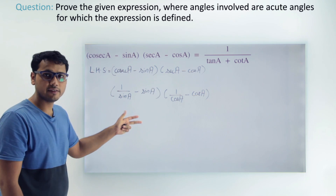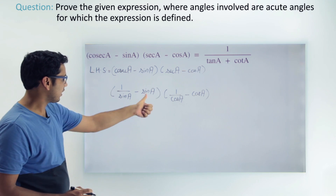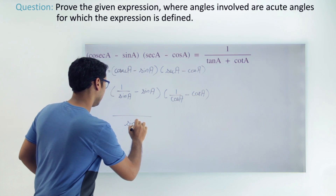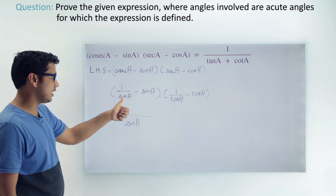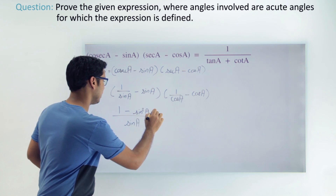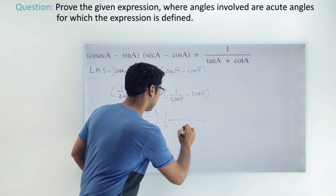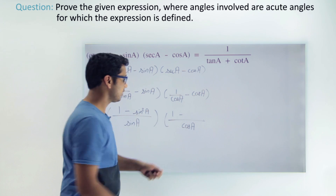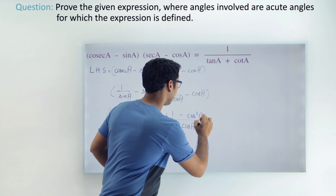Now we can proceed further to simplify. If I take the LCM of the first bracket, the LCM will be sin a, and we get (1 minus sin squared a) over sin a. Similarly, for the second bracket, the LCM will be cos a, giving us (1 minus cos squared a) over cos a.